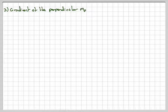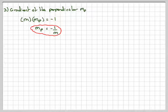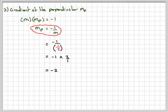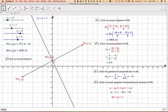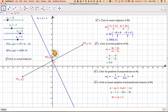Step three: find the gradient of the perpendicular, which we call MP. We know that if two lines are perpendicular, the product of their gradients is minus 1, so MP equals minus 1 over M. Since M is one half, MP equals minus 1 divided by one half, which is minus 1 times 2, giving minus 2. On the graph we can see that for every one square along, the perpendicular line goes 2 down.